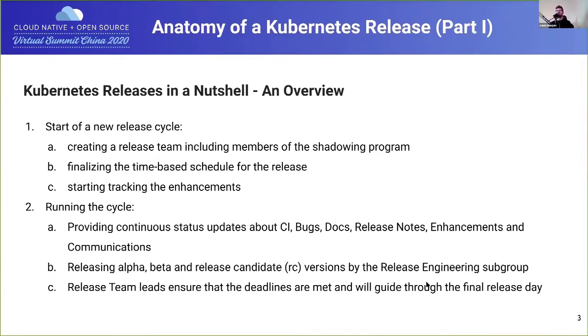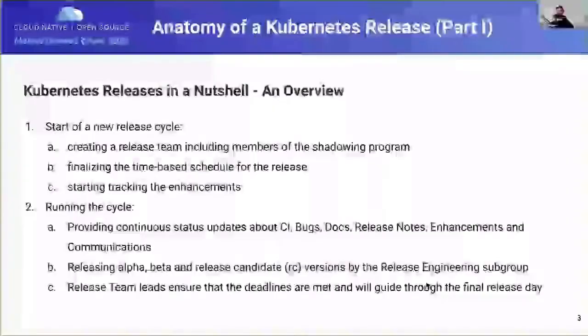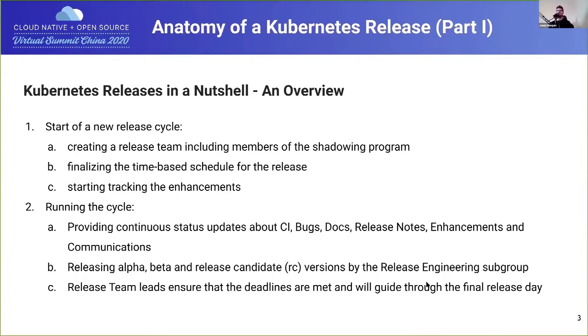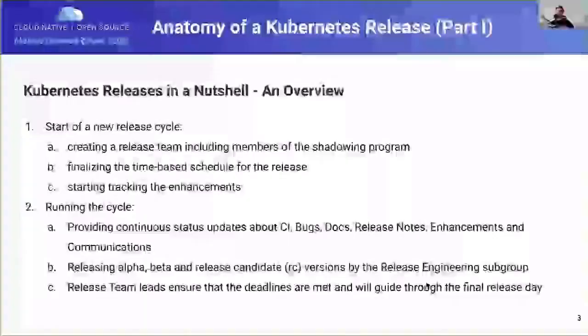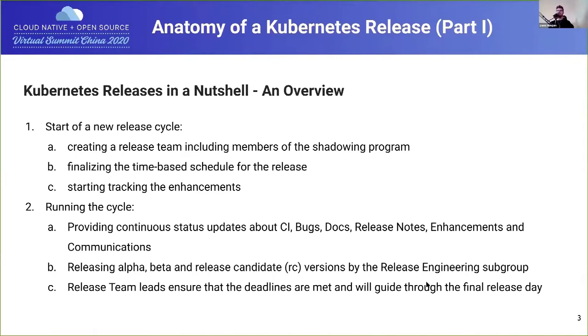After assembling the team, you need to set the schedule for the release. There are different deadlines for different parts of the release so that people implementing features into Kubernetes know when they have to have things merged or reviewed. Then you start tracking items due by each deadline. Throughout the cycle, we have continuous updates starting on a weekly basis, as well as intermediate alpha, beta, and RC releases done by the Release Engineering subgroup.